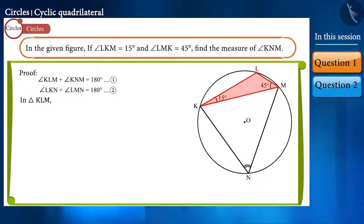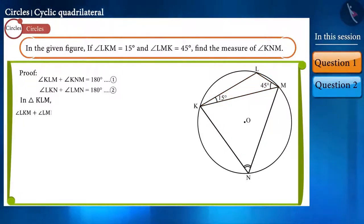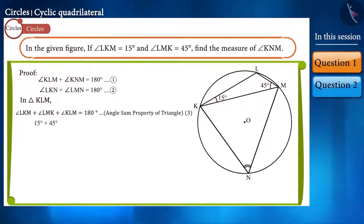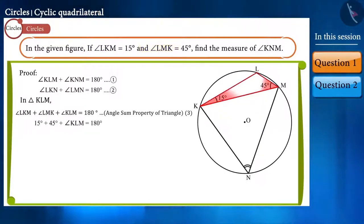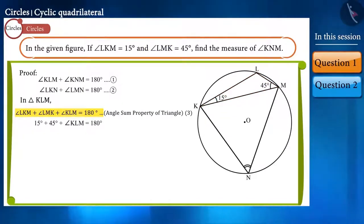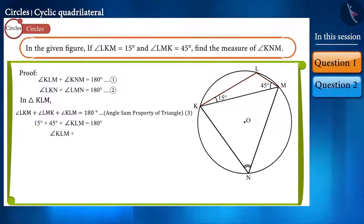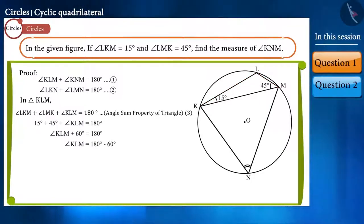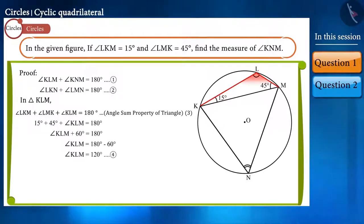Now, observe the triangle KLM. We know that the sum of the three angles of a triangle is 180 degrees. We know the value of both these angles. By placing their values in this equation, we can easily find the value of angle KLM.